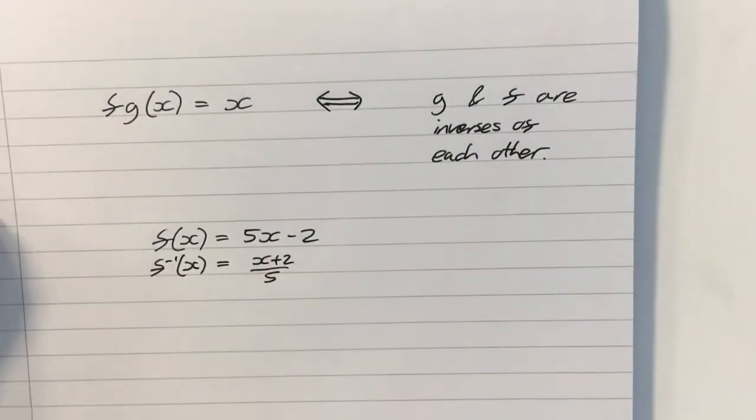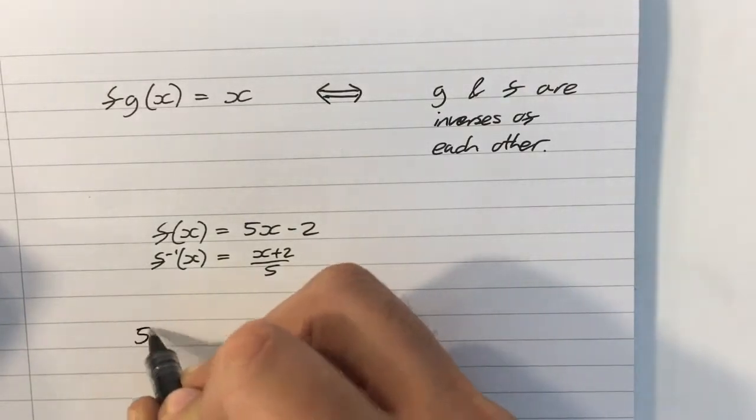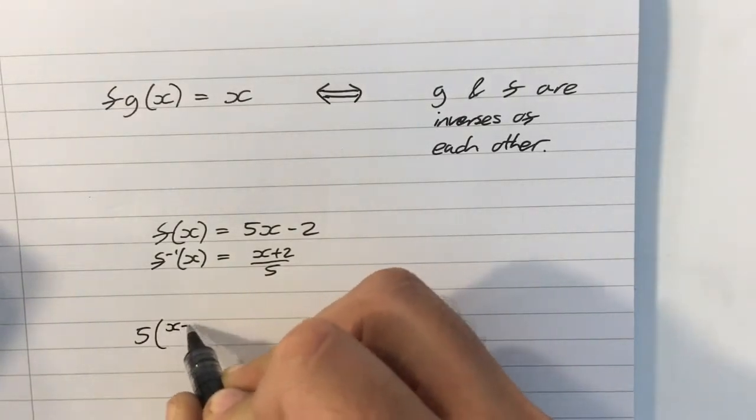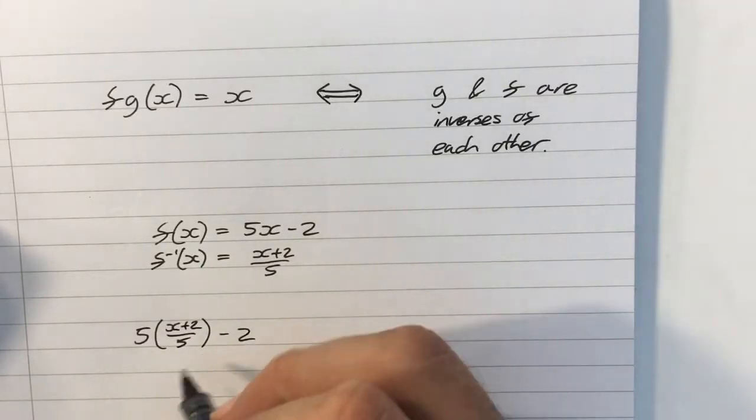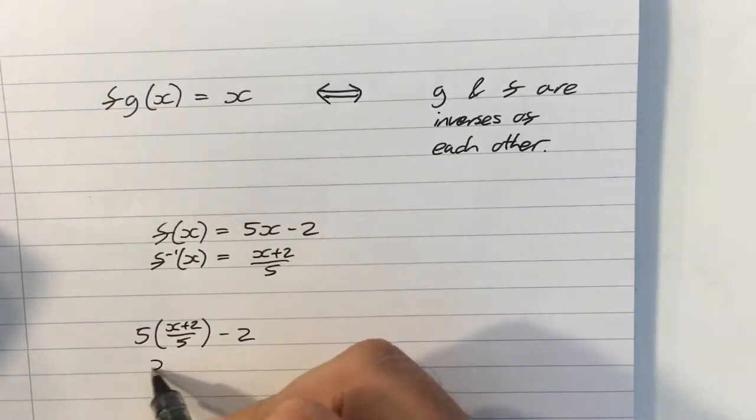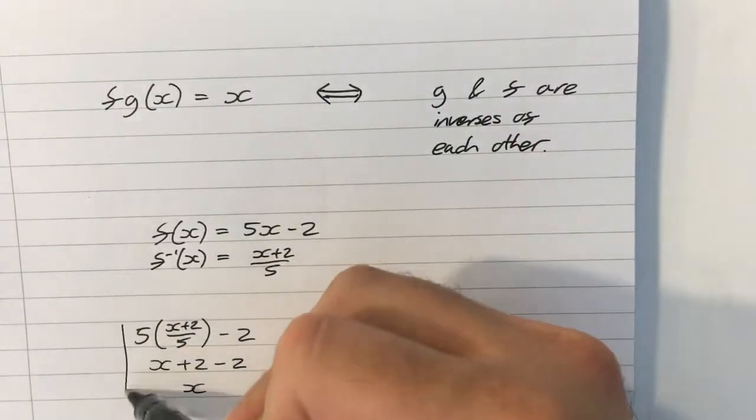Now, if I composite those in either order, it doesn't matter, I'll get 5 into x plus 2 over 5 minus 2, which, you know, 5s will cancel, so I get x plus 2 minus 2, which leaves me with x.